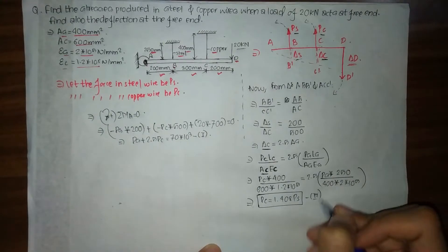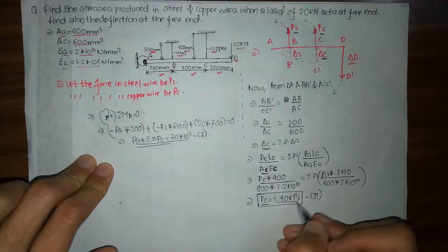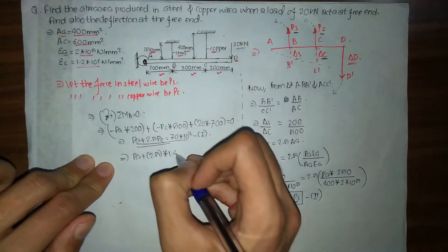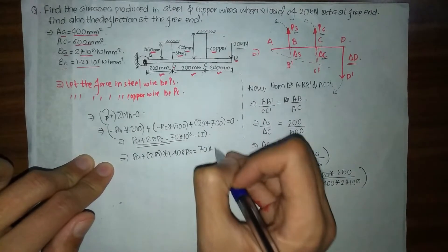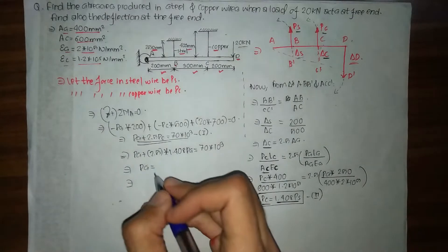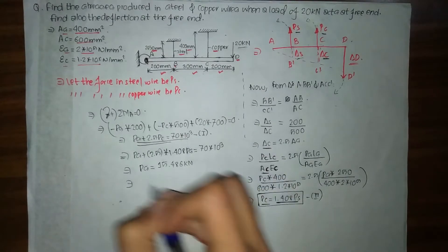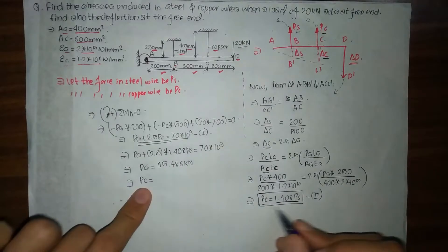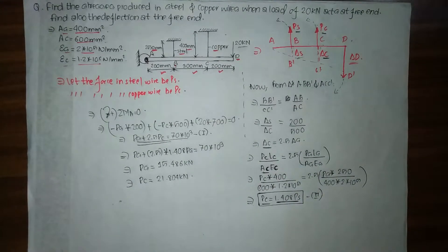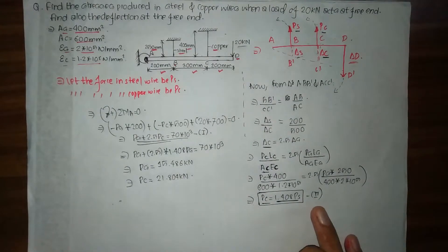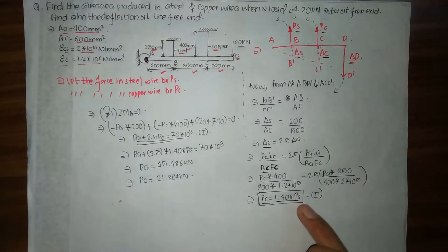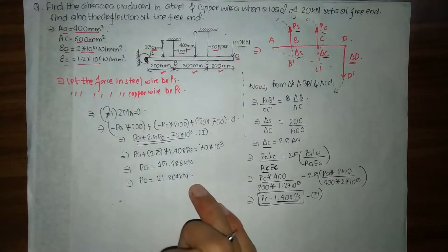Substituting P_C = 1.408·P_S into Equation 1: P_S + 2.5×1.408·P_S = 17×10³. On solving, we get P_S = 15.486 kN. And P_C = 1.408 × 15.486 = 21.804 kN.